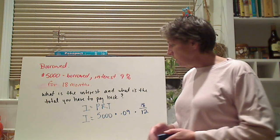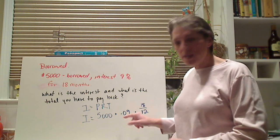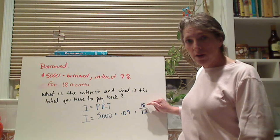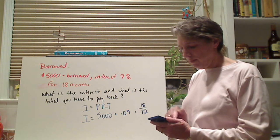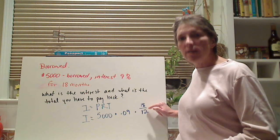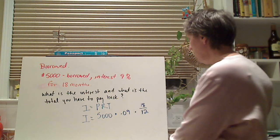Do you remember how to do it? I enter 5,000 times 0.09, times the numerator, the months, 18. But then what do I do? What does that mean? Divide by 12. And I get $675.